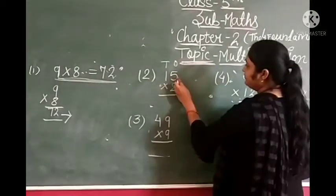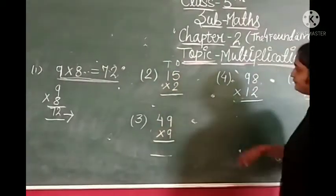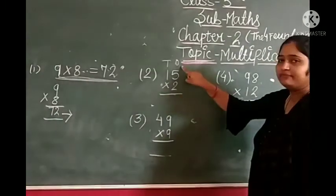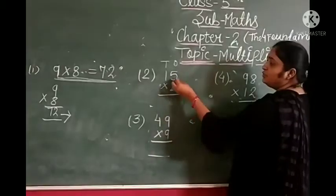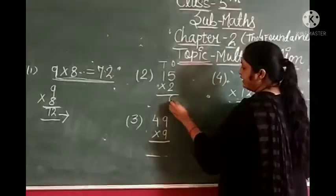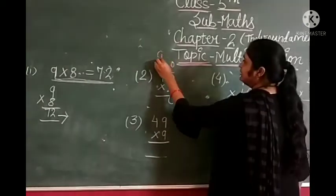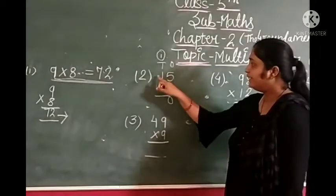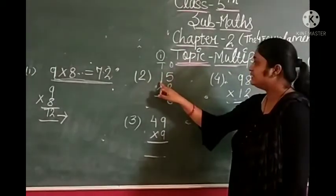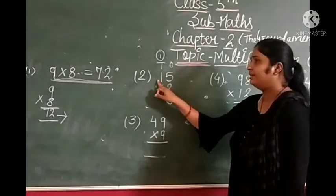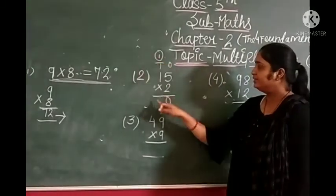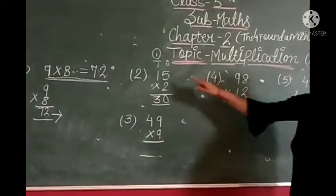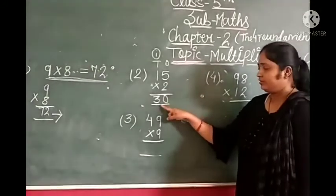The second example is 15 multiplied by 2. Here we have a 2-digit number. First we multiply 2 with the ones digit, which is 5. 2 fives are 10. We write 0 and 1 is carryover. Now we multiply 2 by the tens digit, which is 1. 2 ones are 2, plus 1 is 3. Our answer is 13, so 15 times 2 is 30.